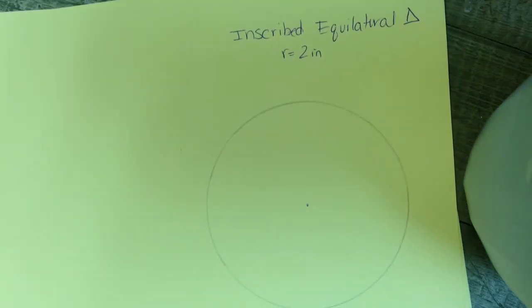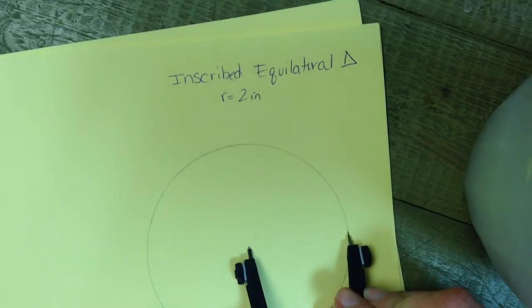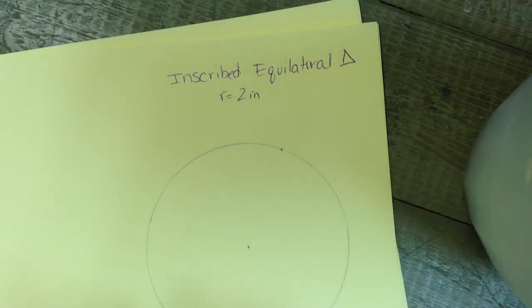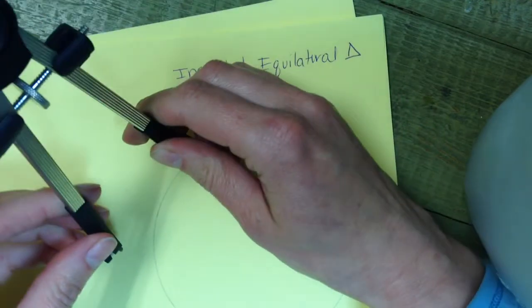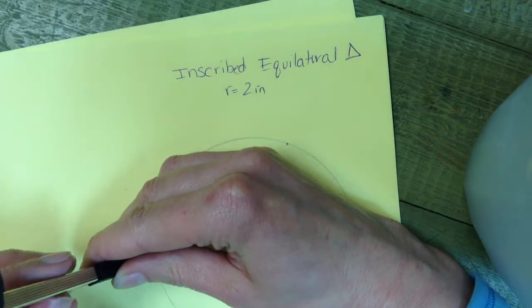We're going to do the same construction that we did with the hexagon. There is my radius of two inches, and I'm just going to take a point on my circle and mark off two inches all the way around the circle.